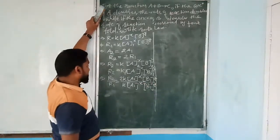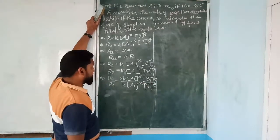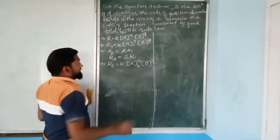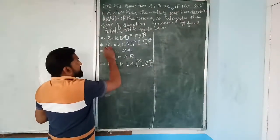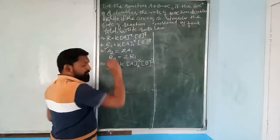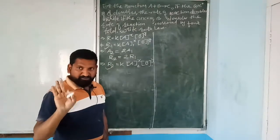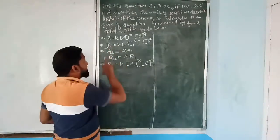With x = 1 and y = 2, our final rate law is R = k[A][B]². This is the required rate law for the given conditions.